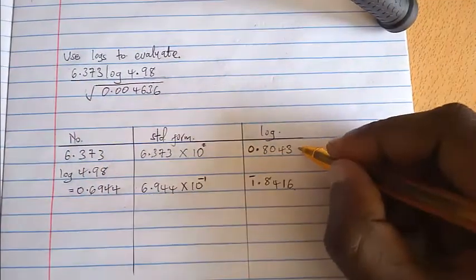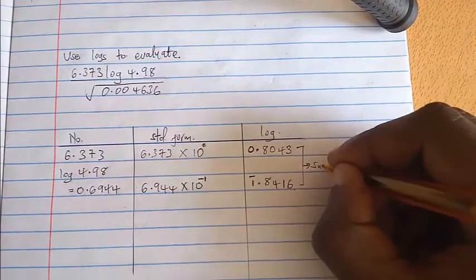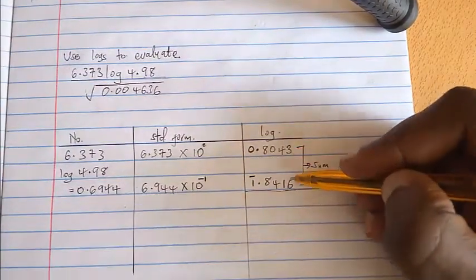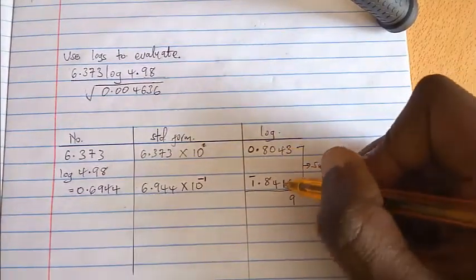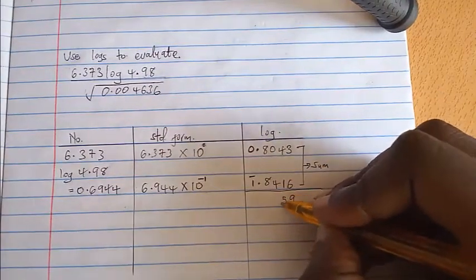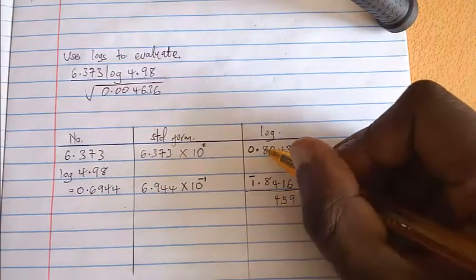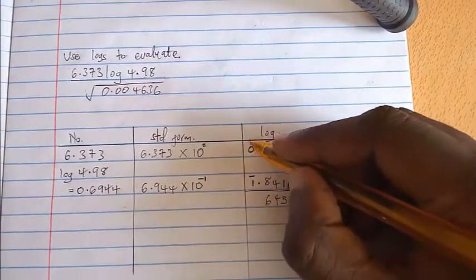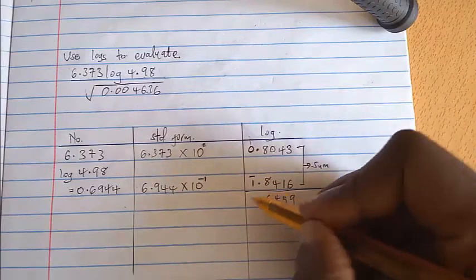Now because we have a multiplication sign between these two numbers we'll need to add them up, so we'll find this sum. When we add these two, two added to six that will be nine, four added to one will be five, four added to zero will be four, eight added to eight will be 16 carry one, then one added to negative one will be zero.